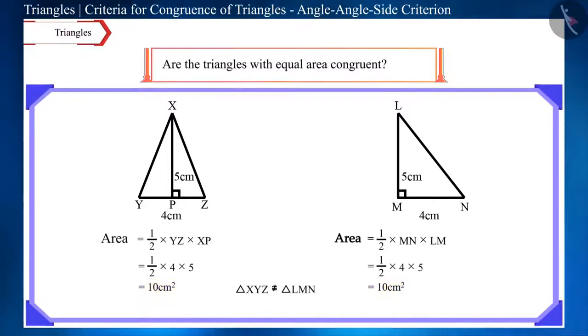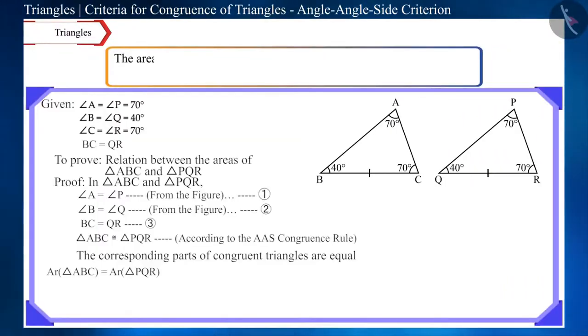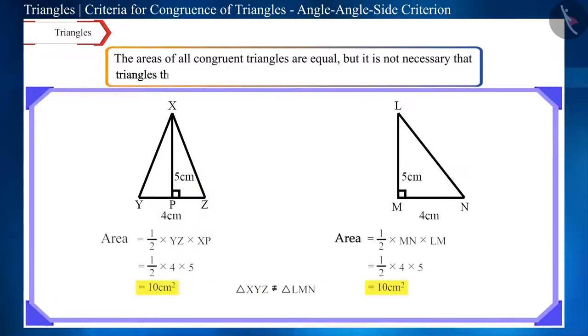From this, we can conclude that the areas of all congruent triangles are equal, but it is not necessary that the triangles that have equal area will be congruent.